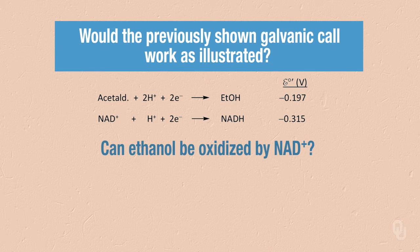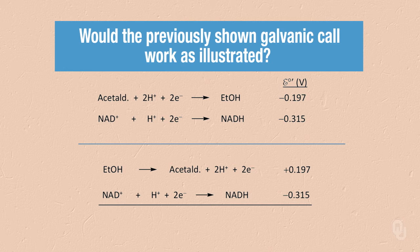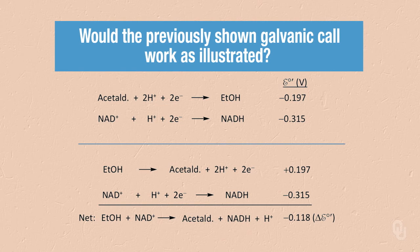We ask whether ethanol can be oxidized by NAD plus. Reversing the first half reaction and changing its sign gives ethanol going to acetaldehyde at plus 0.197 volts. Keeping the second half reaction as written gives NAD plus plus a proton plus two electrons forming NADH at minus 0.315 volts. The net reaction—ethanol plus NAD plus going to acetaldehyde plus NADH plus a proton—has a delta E naught prime of minus 0.118 volts.